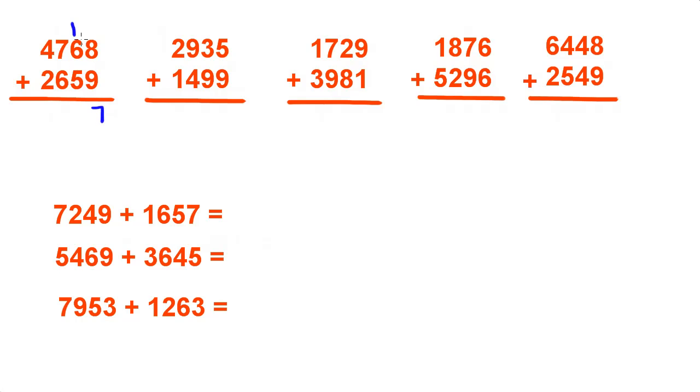5 and 6 is 11 plus 1 is 12. Carry over the 1, bring down the 2. 7 and 6 is 13 plus 1 is 14. And 4 plus 2 is 6 plus 1 is 7. So there's your product, 7,427.